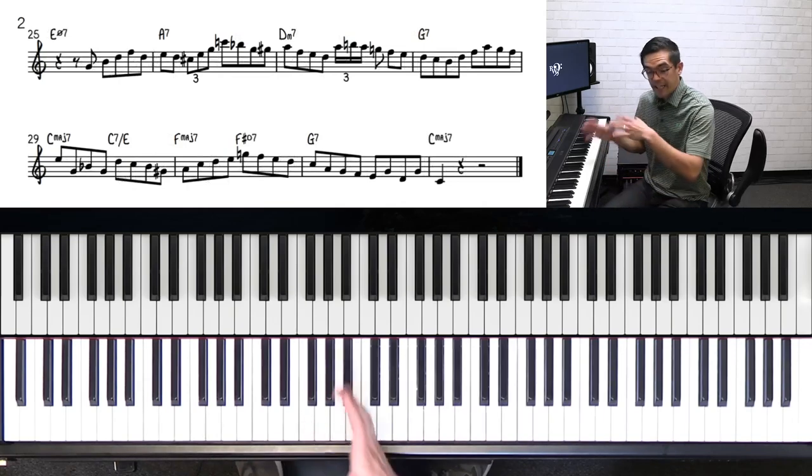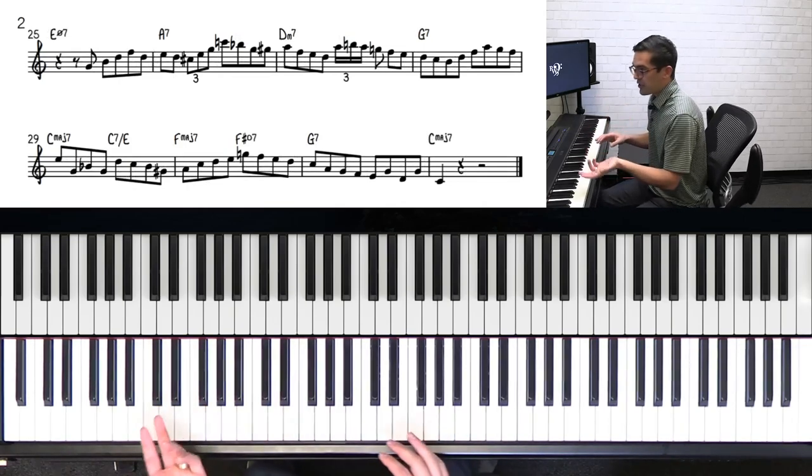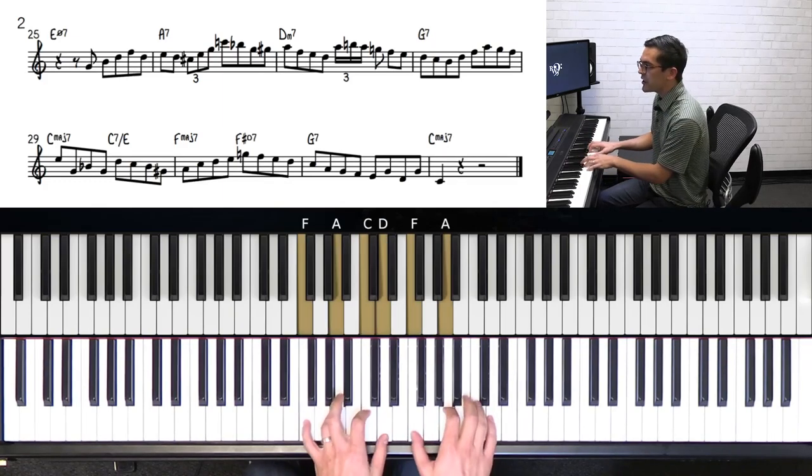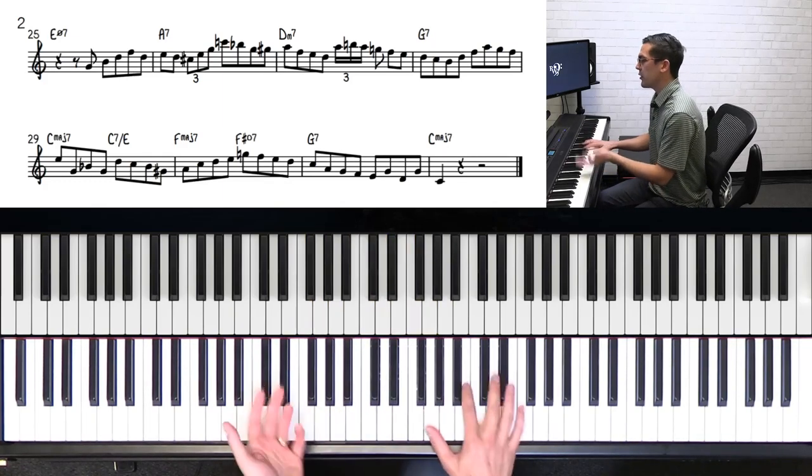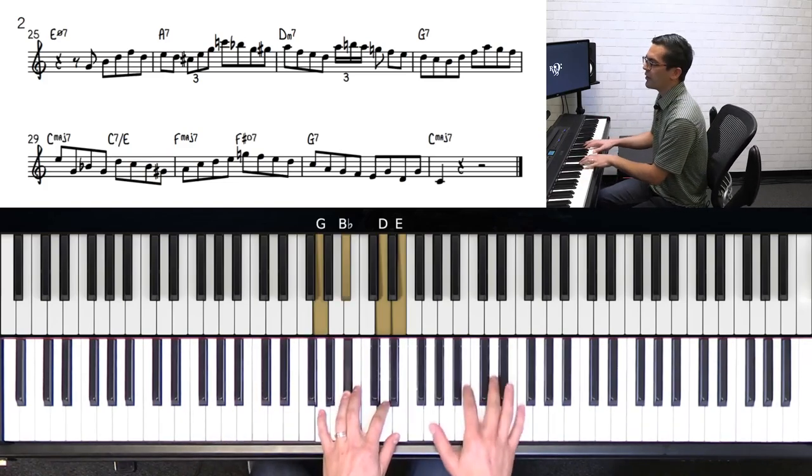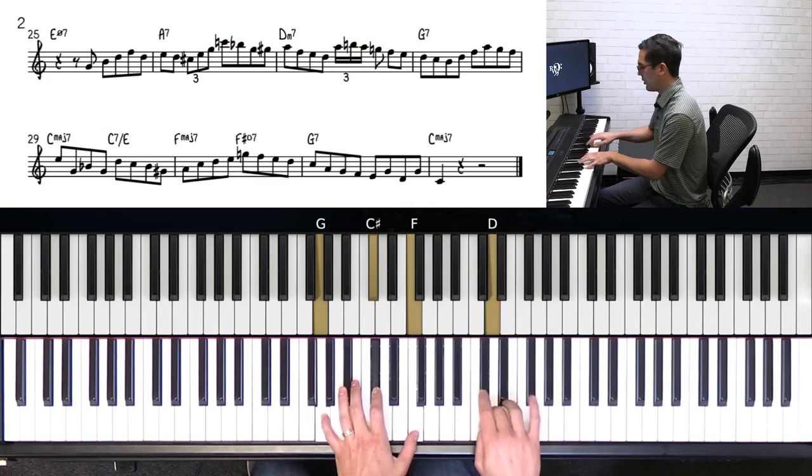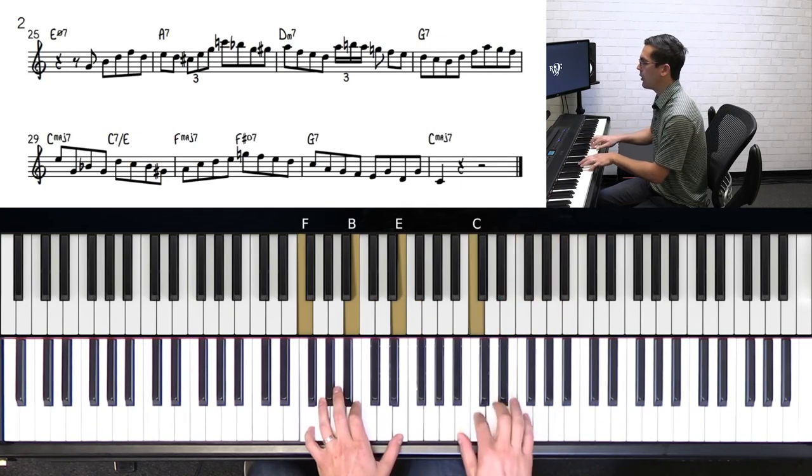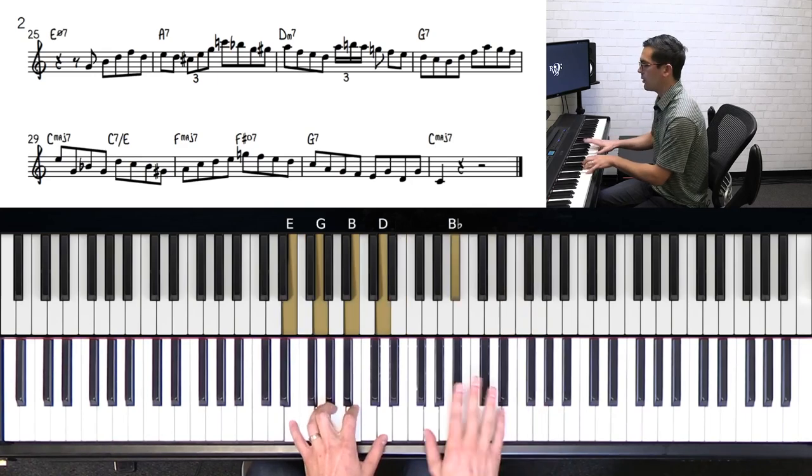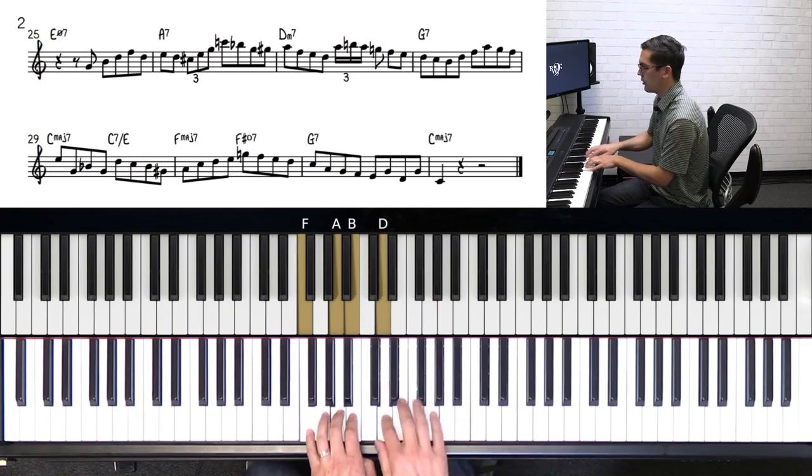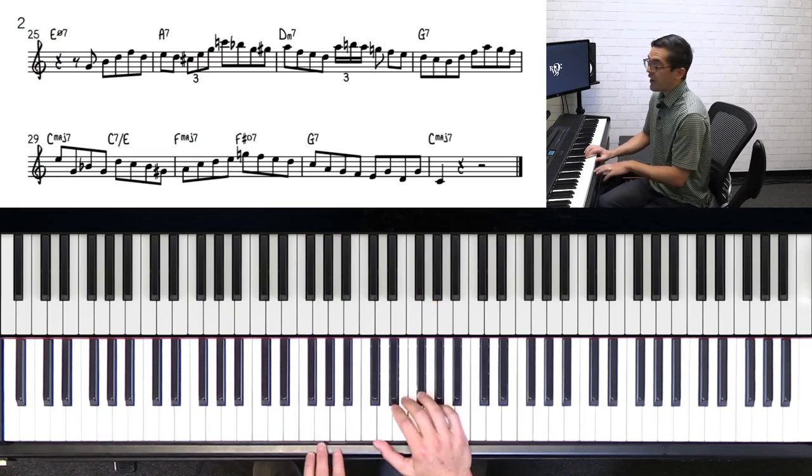Now moving into the second half of the second chorus, the changes again are the same as the second half of the first chorus. You have that E half diminished going to A7, and then D minor, G7. So let's listen to that line that he plays and talk about it a little bit. So here it is. One, two, three.